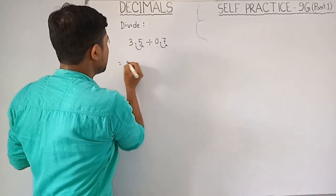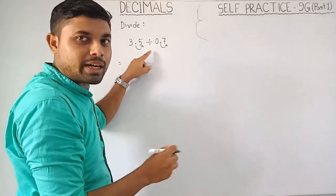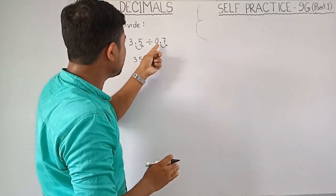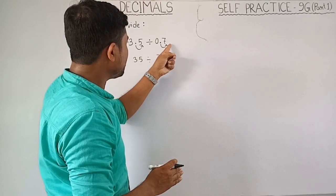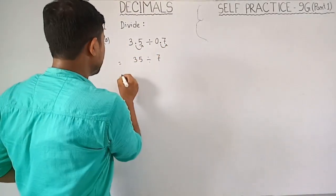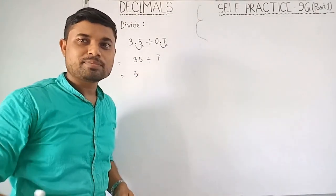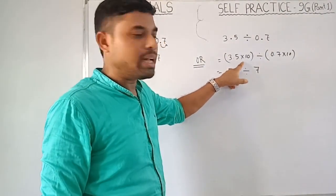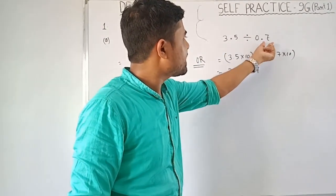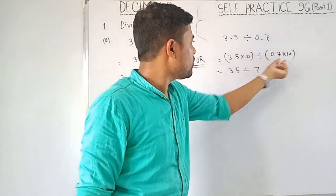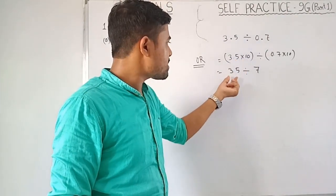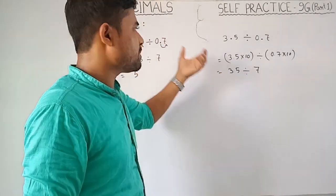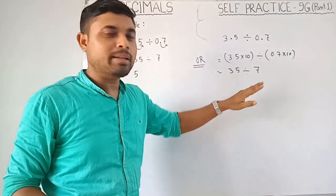So we move the decimal point one place, giving us 35 divided by 7. Similarly we move the decimal point in the dividend one place. The concept behind this is that we are multiplying by 10 to make 0.7 into 7, and by the same number we multiply the dividend, so 3.5 becomes 35. No need to memorize this - the main concept is multiplication.